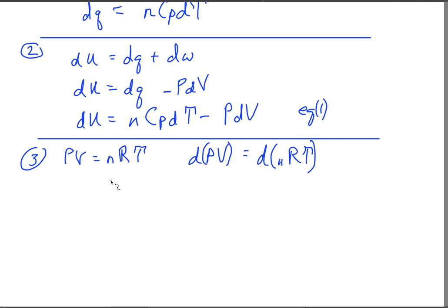And we can do that at constant pressure. That becomes PdV equals N as a constant, R as a constant, and dT.